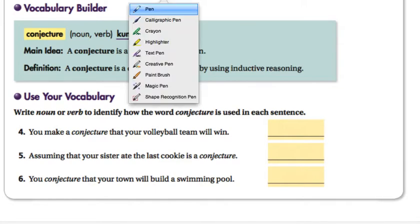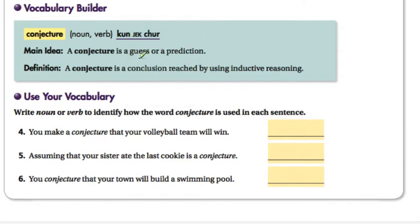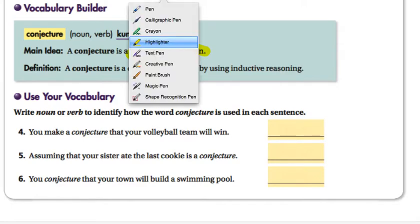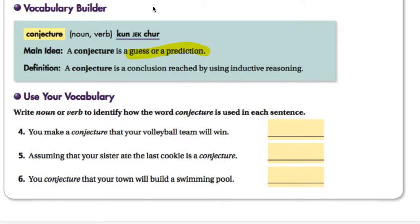A conjecture is a new vocabulary word, and a conjecture is just a guess or a prediction. A conjecture is a conclusion that we reach when we use inductive reasoning. There's two kinds of reasoning that we'll talk about - inductive reasoning and deductive reasoning - and we'll talk about that more in detail in the future.